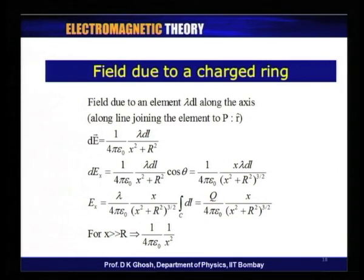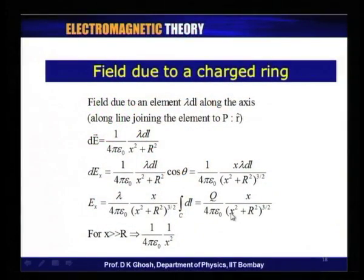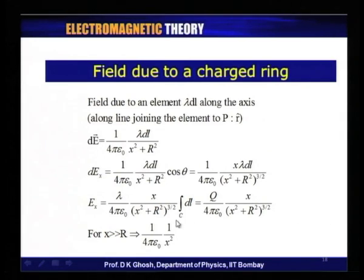There is an interesting consequence: if the distance x is much larger than the radius r, a small ring looks like a point charge. We should recover the electric field due to a point charge. Indeed, if x >> r, we can neglect r² in the denominator, and (x²)^(3/2) gives x³, leaving x/x³ = 1/x², which is nothing but Coulomb's law.